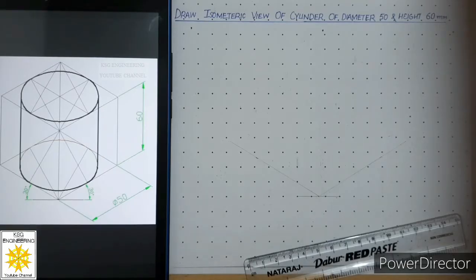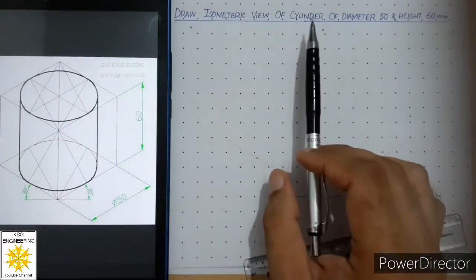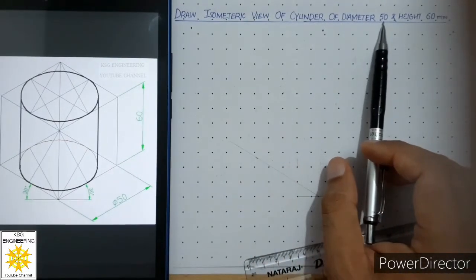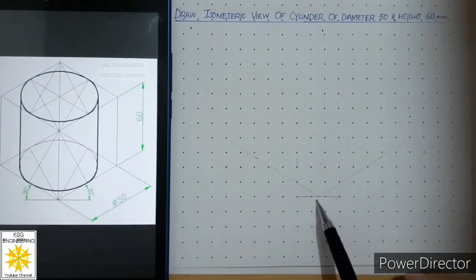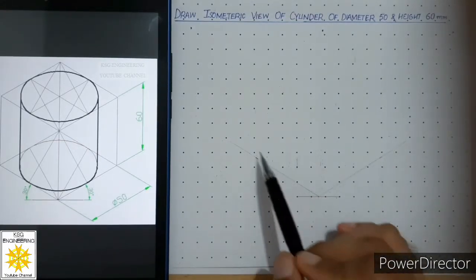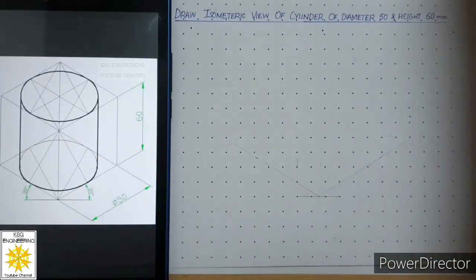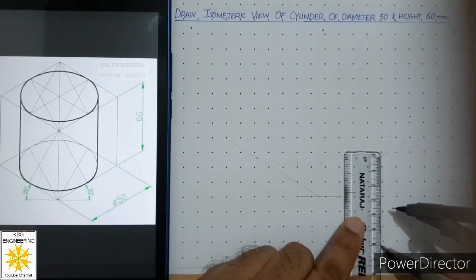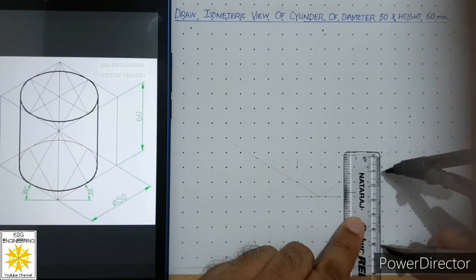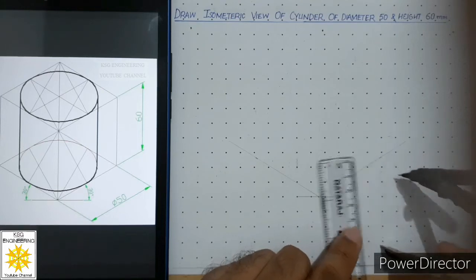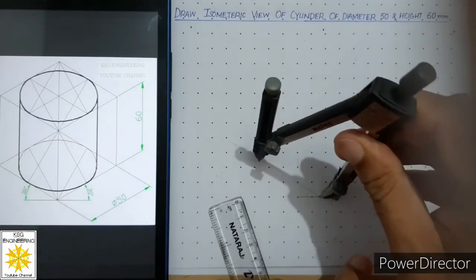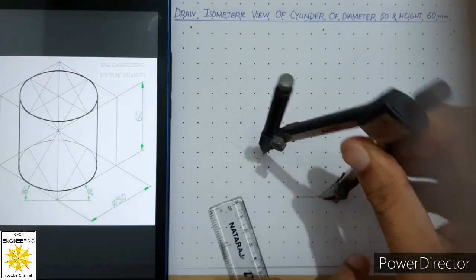After this we will see the diameter of the cylinder given in the question. The diameter given to us is 50 millimeters. So the next step is to cut these two lengths to 50 millimeters. Let us open the compass to 50 millimeters and cut these two lengths to 50, drawing a thin curve on both sides.